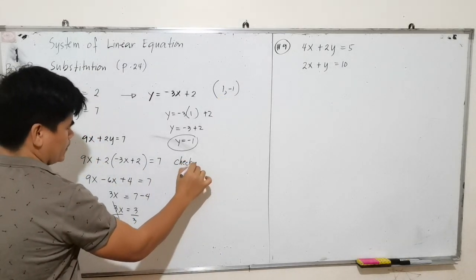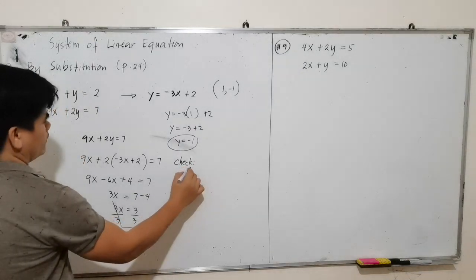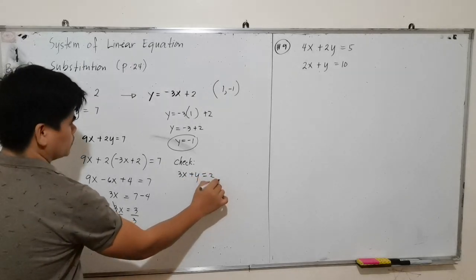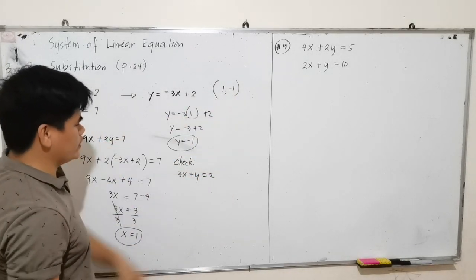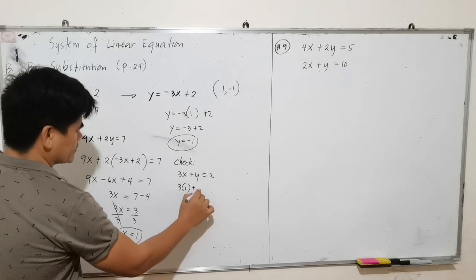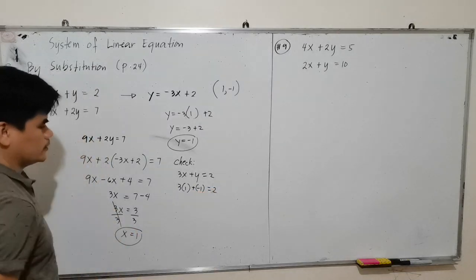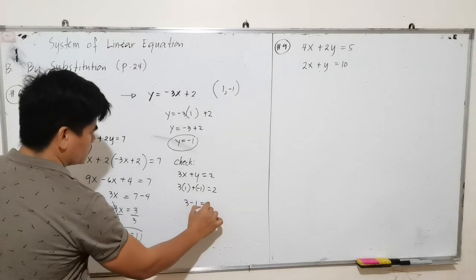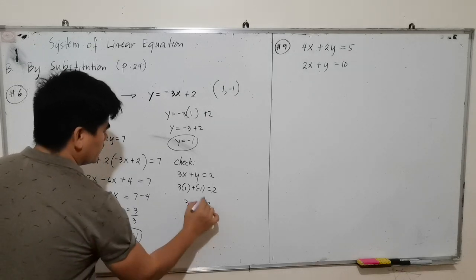Therefore, the solution set is (1, negative 1). Let us check using the first equation: 3x plus y equals 2. Substituting x equals 1 and y equals negative 1: 3 times 1 plus negative 1 equals 3 minus 1 equals 2. Therefore, 2 equals 2. ✓